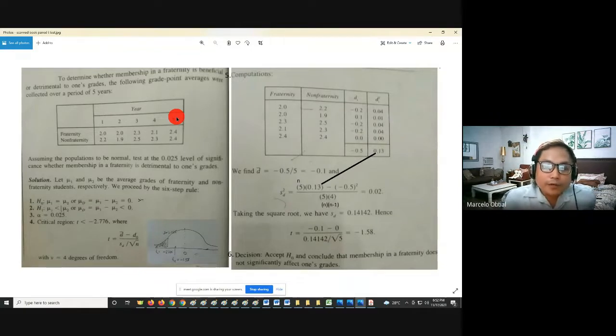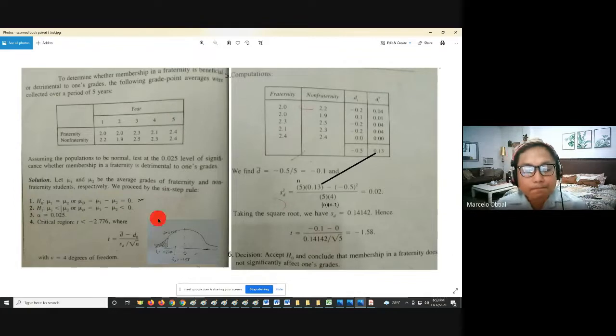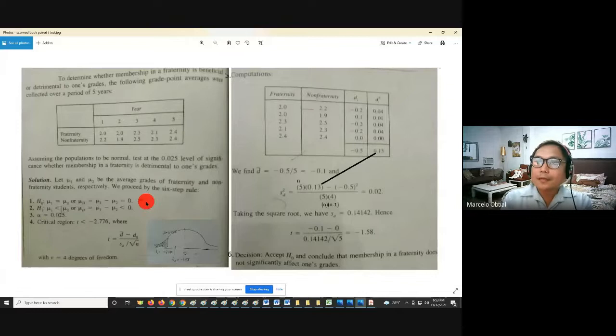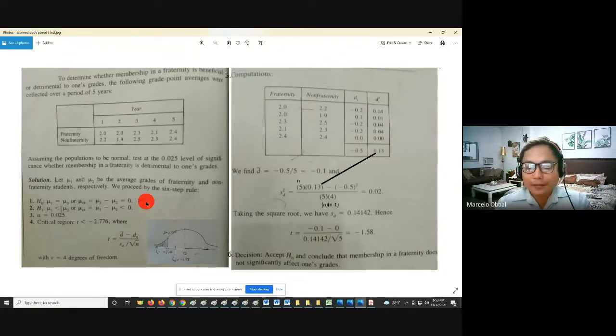Now, assuming the populations to be normal, test at 0.025 level of significance, whether membership in a fraternity is detrimental or barrier hindrance to one's grades. And look at the screen. So, dalawang groups. Now, if you will compare them as equal, it means to say, if they're equal, there's no difference. So, therefore, it is not detrimental. Correct? Because you're assuming that they're equal, yung pag-joined in a fraternity. So they're equal. So, kapag binindlack mo yung dalawang equal na variable or number, the answer is always 0. So, there is no difference.